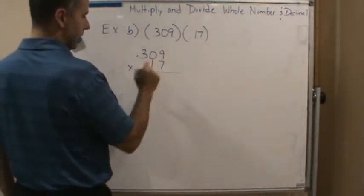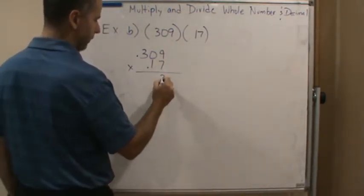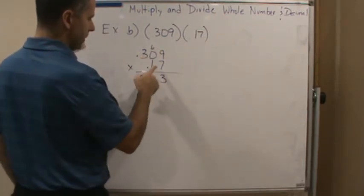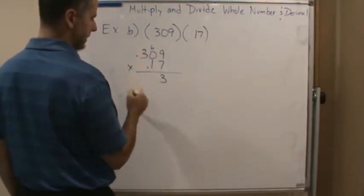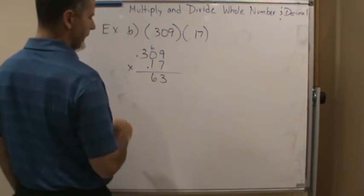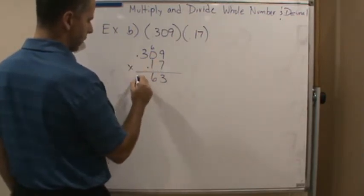So, 7 times 9 is 63. 7 times 0 is 0, plus 6. And then 7 times 3 is 21.